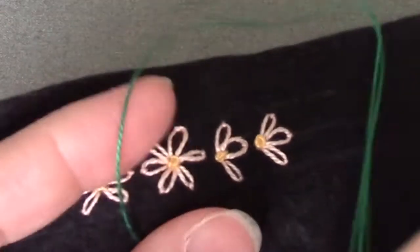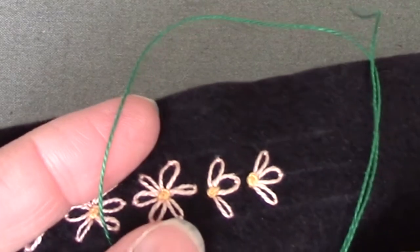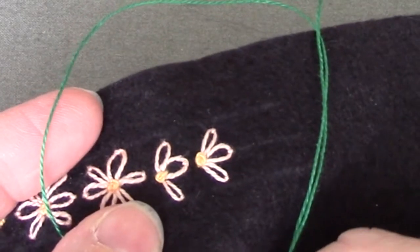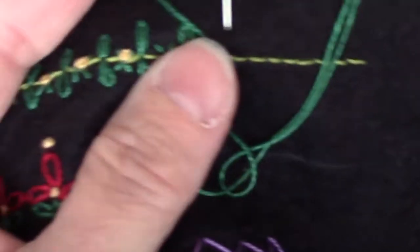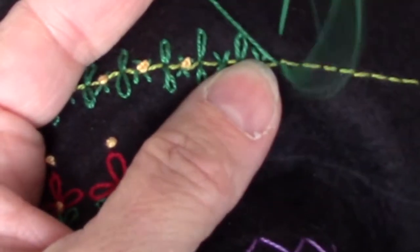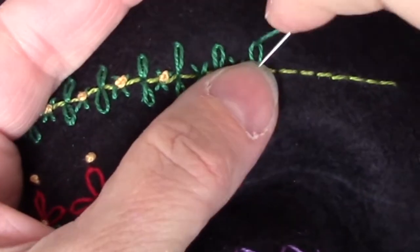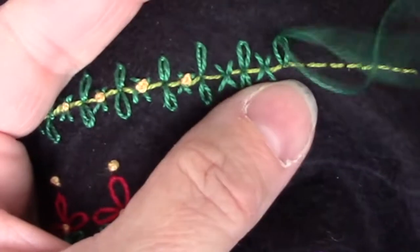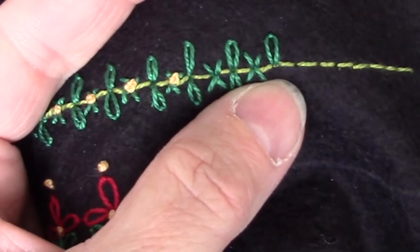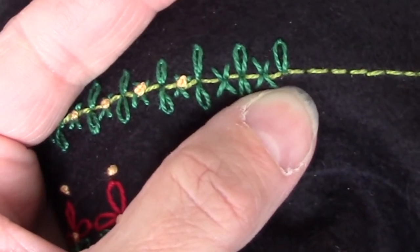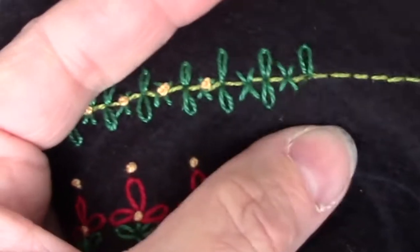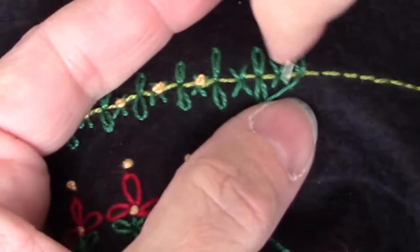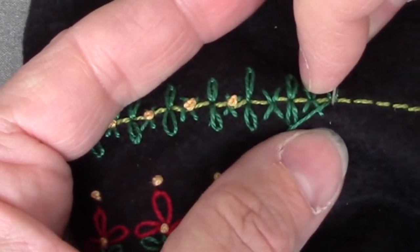And then I'm coming up and between every other back stitch, I am putting in a lazy daisy, two lazy daisies going vertical off of my back stitch. A back stitch is nothing but a whole bunch of straight stitches connected, so that works.